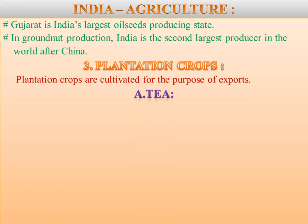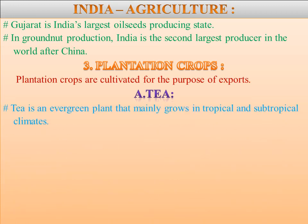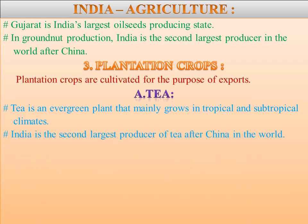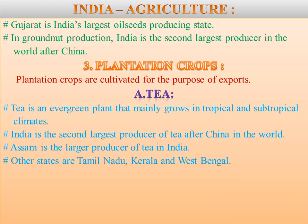First we are going to learn about tea. Tea is an evergreen plant that mainly grows in tropical and subtropical climates. Tea is labor intensive and grows faster under light shade. Tea plants require high rainfall but their roots cannot tolerate waterlogging. Two major varieties of tea are cultivated in India: Bohea, which originated from China, and Assamica, which originated from India. A number of hybrid varieties have been developed by mixing these two. India is the second largest producer of tea after China in the world. Assam is the largest producer of tea in India. Other states are Tamil Nadu, Kerala, and West Bengal.